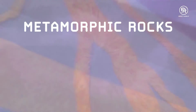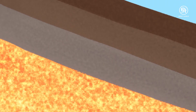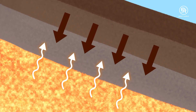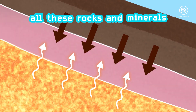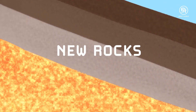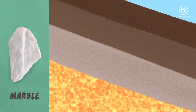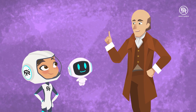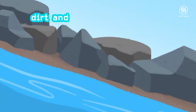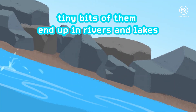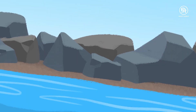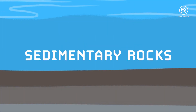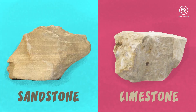Metamorphic rocks are formed out of existing rocks and minerals. When the heat of the magma rises up from below and the weight of the rocks pushes down from above, all these rocks and minerals in the middle chemically change from what they were into the new rocks they have become. Some of my favourite metamorphic rocks are marble, quartzite, gneiss, and slate. When dirt and rocks are eroded by wind and rain, tiny bits of them end up in rivers and lakes, and over many years this sediment is deposited along river or lake beds, eventually hardening into sedimentary rocks like sandstone and limestone.